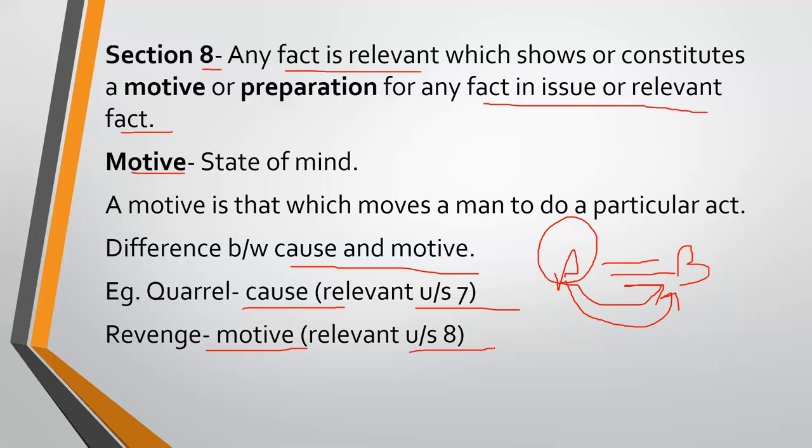Whenever a person commits an offense, in many cases, to prove that the person committed the offense for a reason, it is necessary to prove the Motive. You will hear in the news that someone murdered another person for property. There are many kinds of reasons. If there is an absence of motive, the accused benefits. But if there are direct and clear-cut evidences and direct eyewitnesses, then the Motive is less important. Otherwise, the Motive is relevant to prove a person's guilt. The Motive can be proved by two types: either circumstantial evidence or the person's conduct.